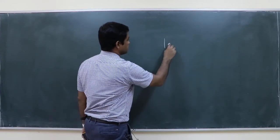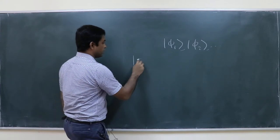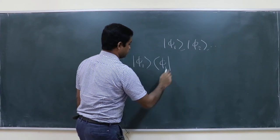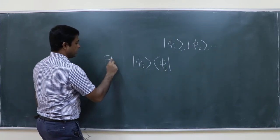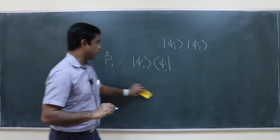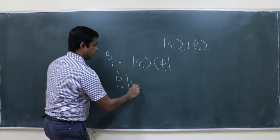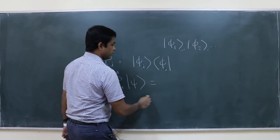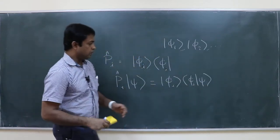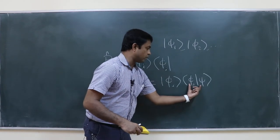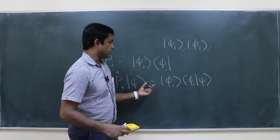You all know about projection operators. Suppose you have φ₁, φ₂, etc., which are orthonormal basis vectors. Then |φ₁⟩⟨φ₁| is a projection operator. In general, |φi⟩⟨φi| is a projection operator. What that means is: if you act this on any vector |ψ⟩, you get φi times ⟨φi|ψ⟩ — which is the component of that vector along φi, giving you the projection vector along ket φi.